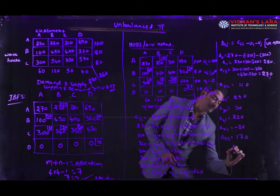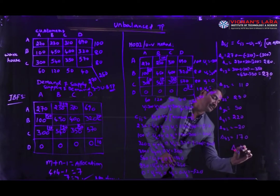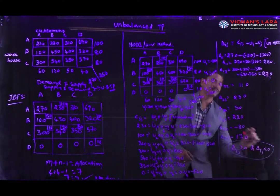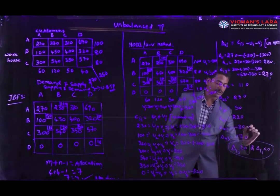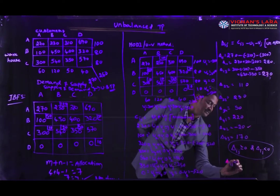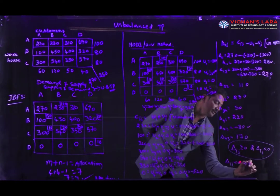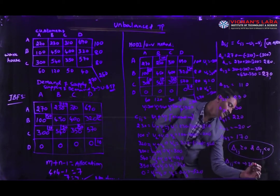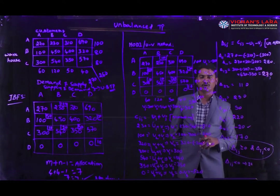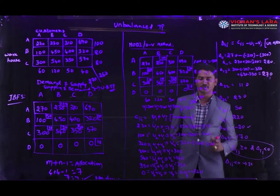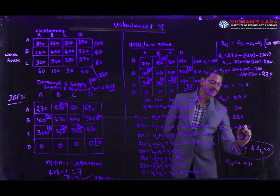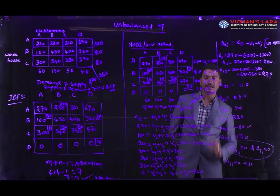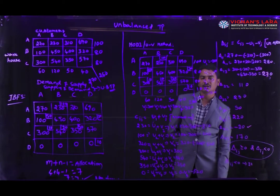We check optimality: if delta_ij is greater than or equal to 0 for all unallocated cells, it is optimal. Here we have one negative value — delta_42 is less than 0. So the problem does not reach optimality. We are going to resolve this by drawing loops at the delta_42 cell because it has the negative value.